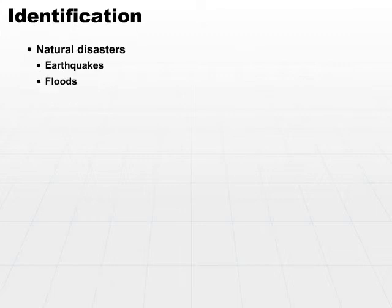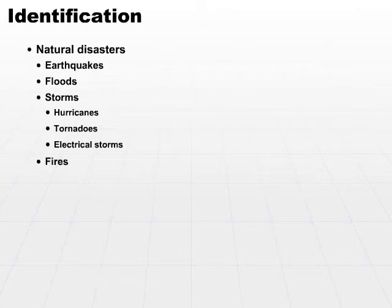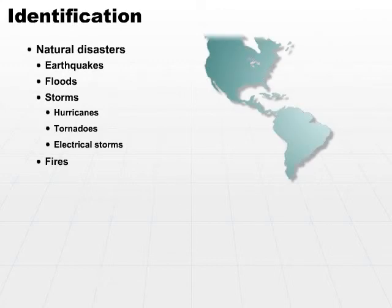Natural disasters include earthquakes, floods, and storms of different types — those can involve hurricanes, tornadoes, or electrical storms — and fire. Depending on where you are in the country, you may have a higher probability of encountering one over another. For example, Southern California has a higher occurrence of earthquakes or wildfires, whereas Georgia has a higher occurrence of tornadoes. It just depends on where you are as to which natural disaster is at the top of your list.